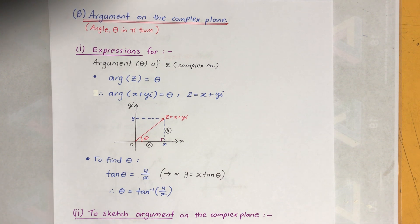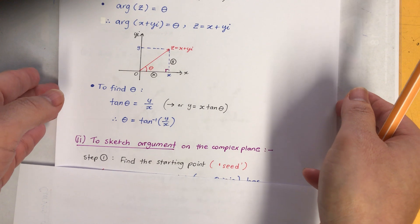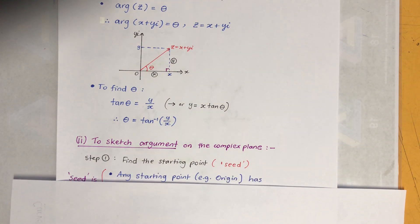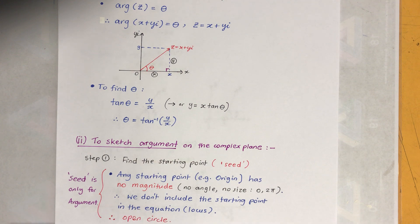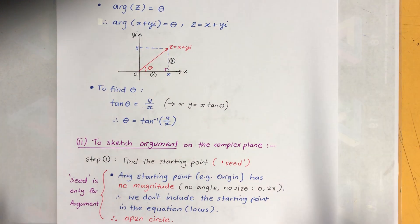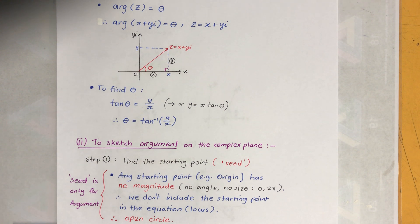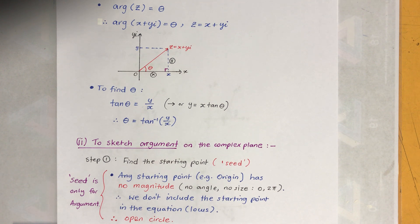To sketch argument on the complex plane, first we need to find the starting point. What's going on here is you have to find the starting point, which some people call the seed. The seed only applies to argument, not modulus. Any starting point such as the origin has no angle and no size — it could be zero degrees or 360 — so we don't include the starting point; we leave it as an open circle.